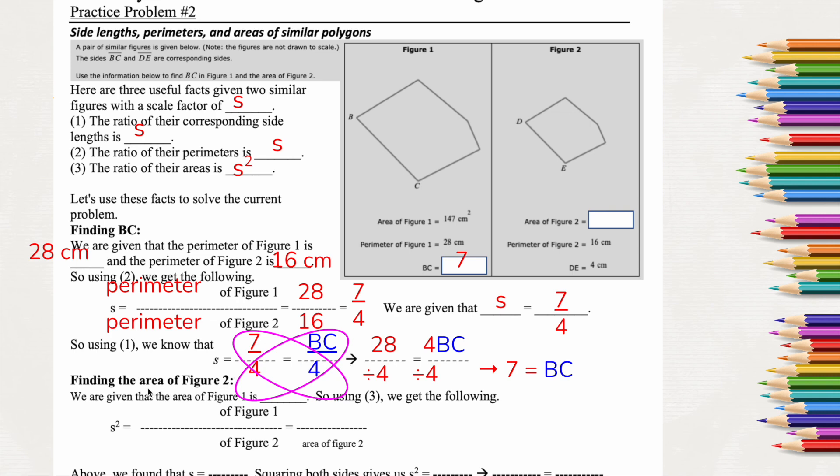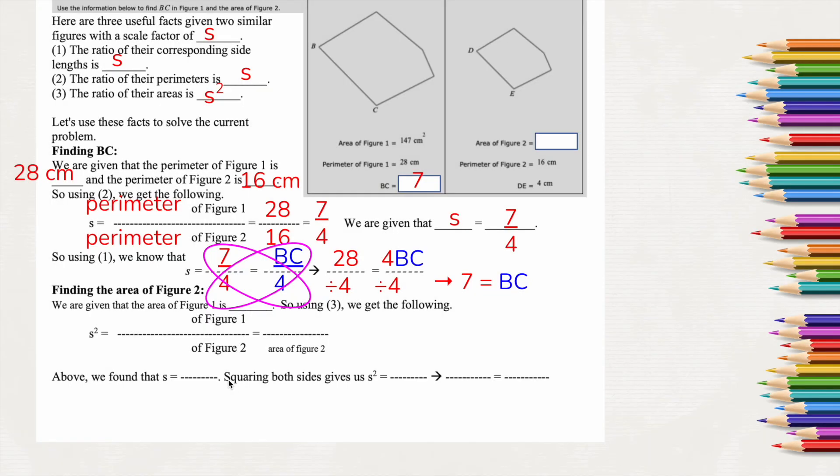Alright, so now we're going to find the area of figure 2. So I'm scooching up here so we can see it. So now I'm going to do the scale factor squared. So the area of figure 1 over the area of figure 2. So I have 147 over the area of figure 2.